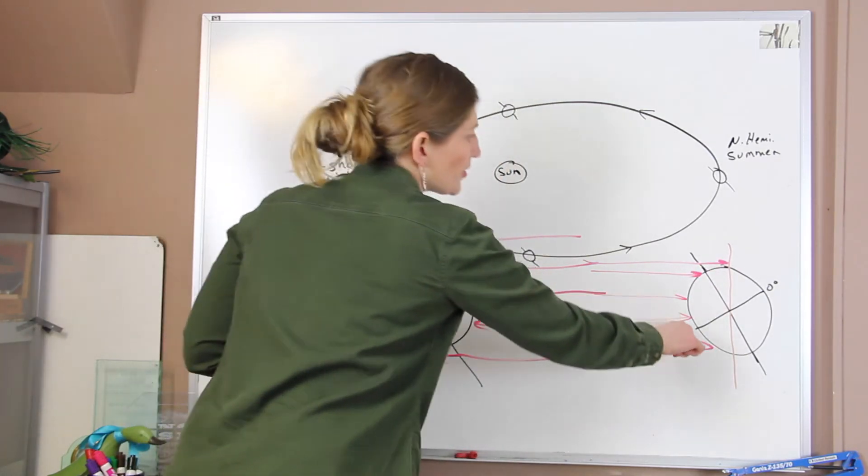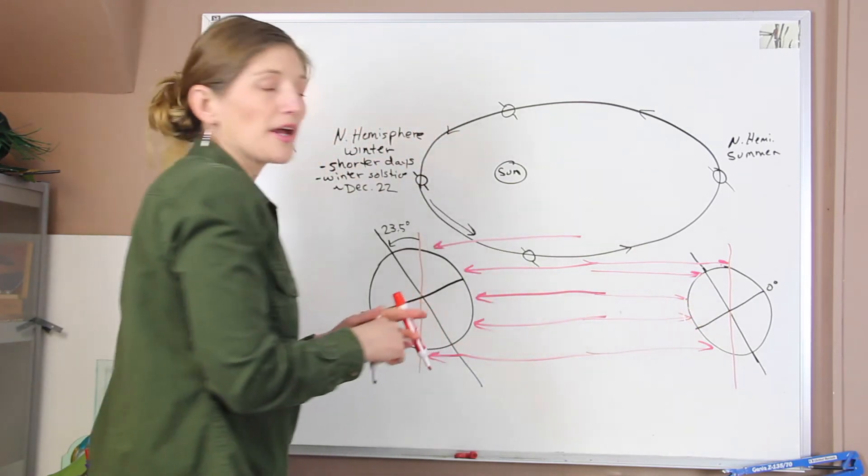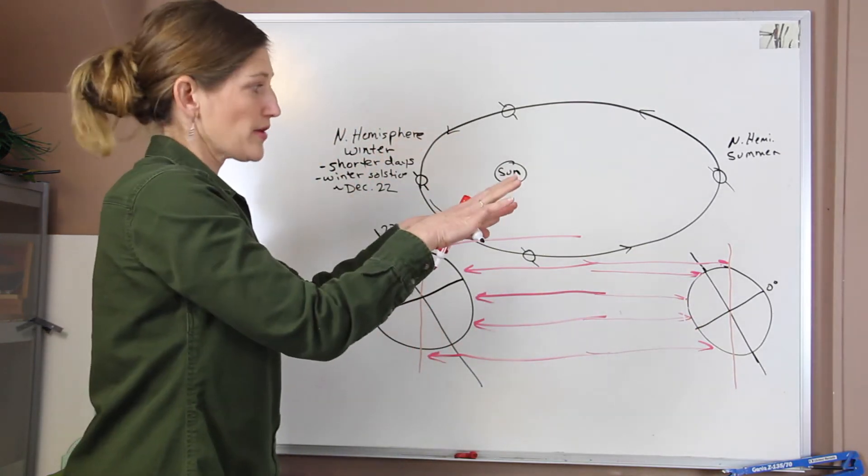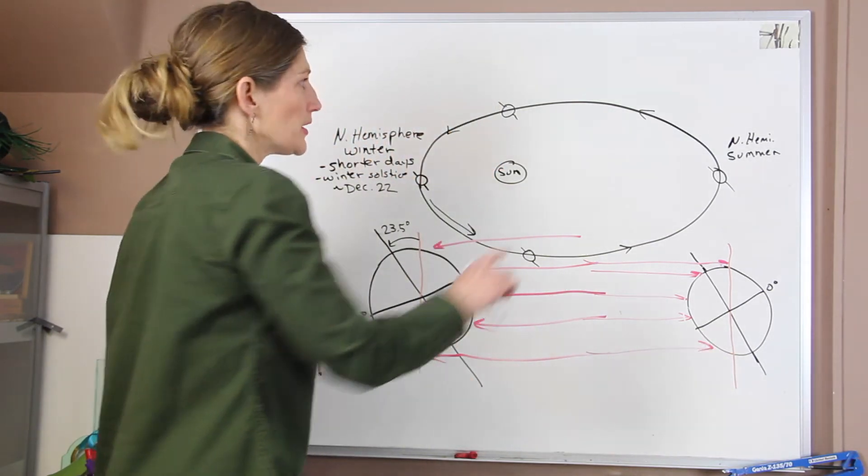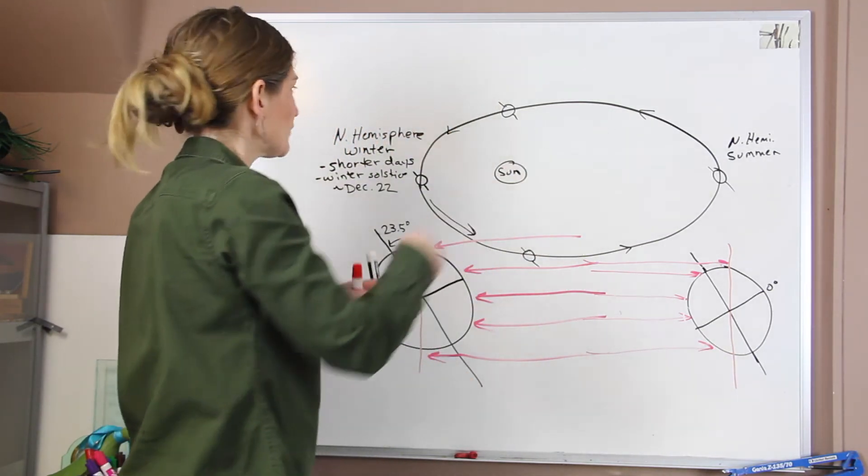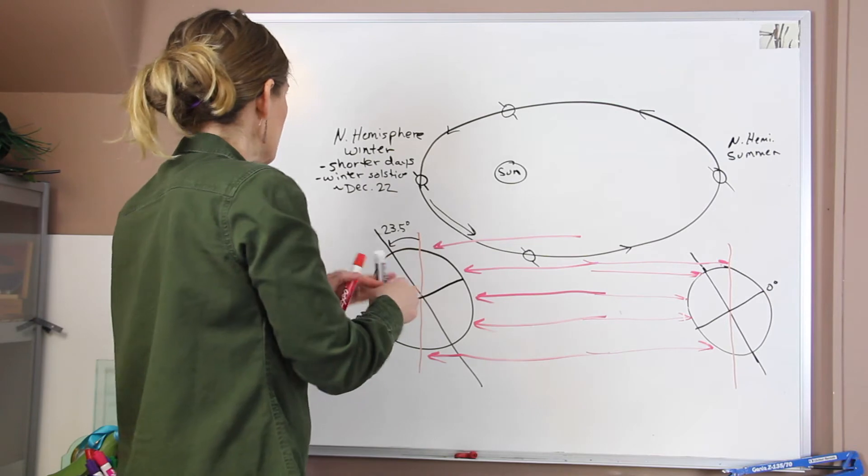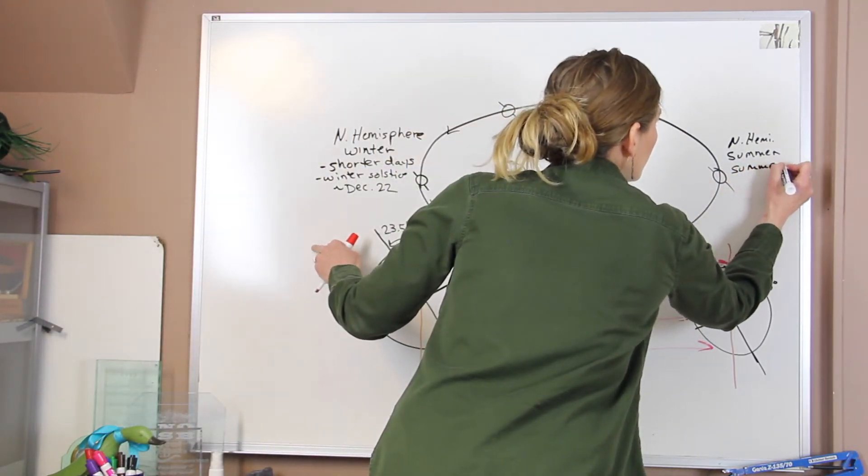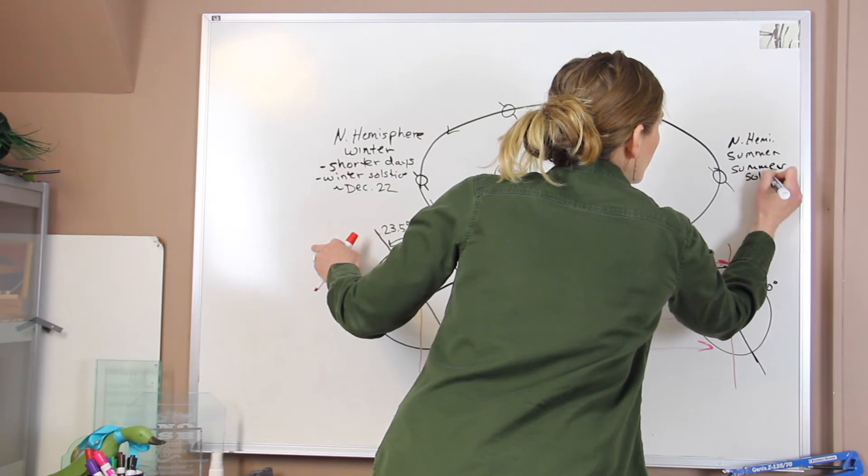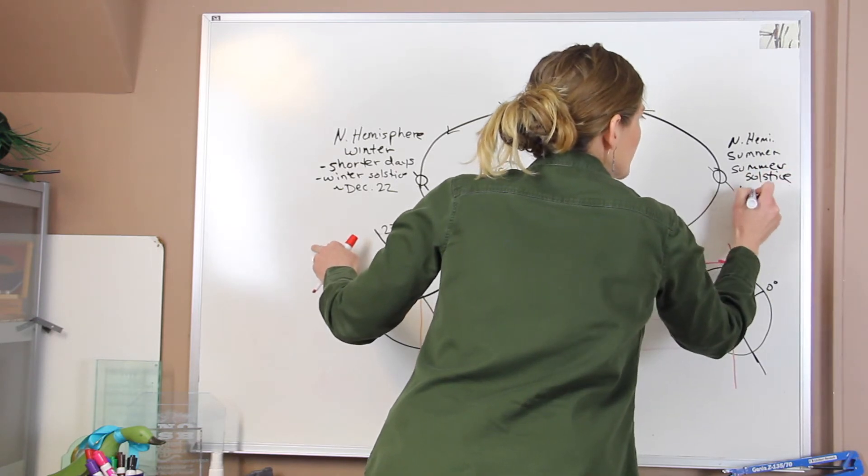We can see that we have more incoming solar radiation hitting the northern hemisphere latitudes than we have in the southern hemisphere. So this is when we have our northern hemisphere summer. This is our summer solstice. We have our longest days.